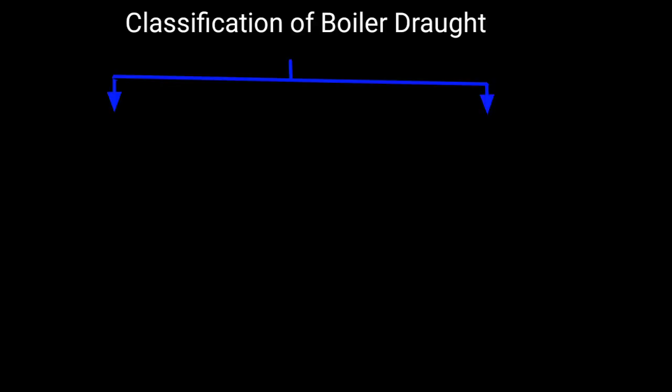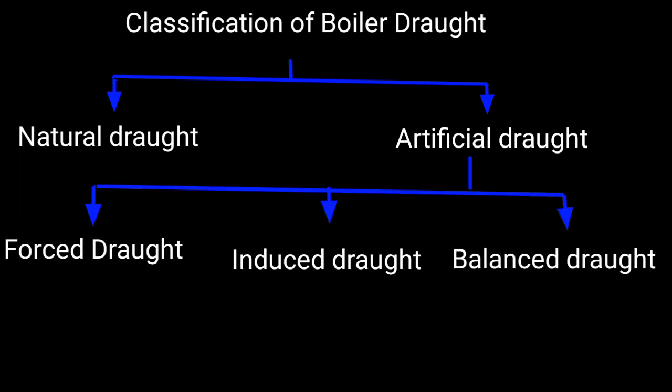Classification of boiler draught. The boiler draught is generally two types: one is natural draught, another is artificial draught. Artificial draught is classified as force draught, induced draught, and balanced draught.